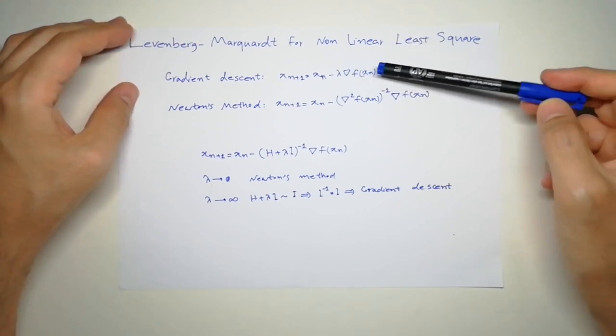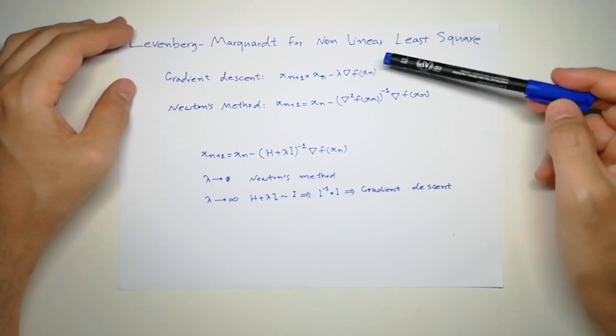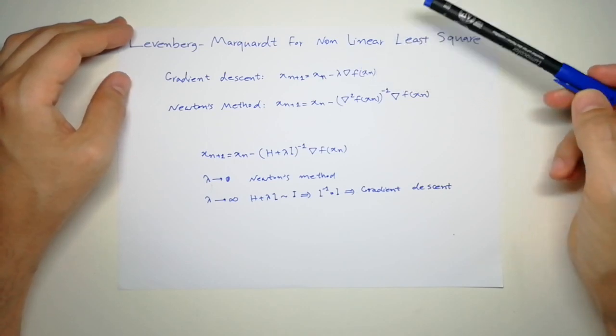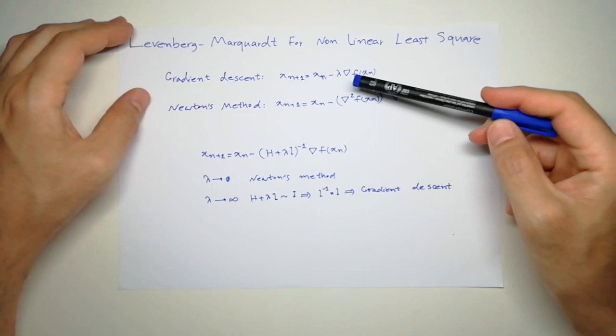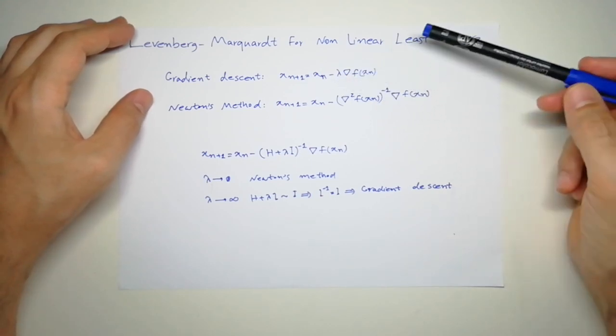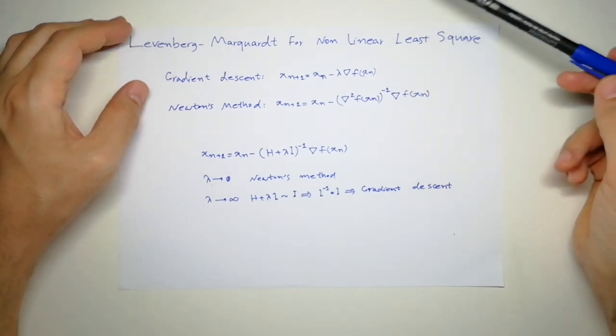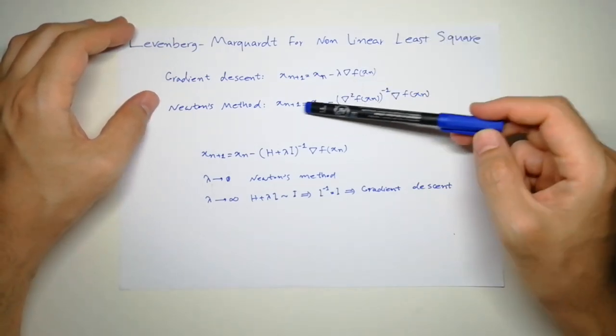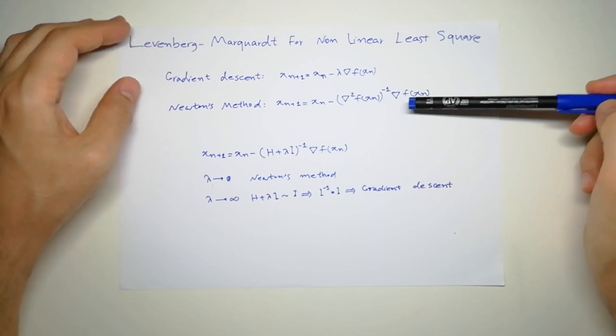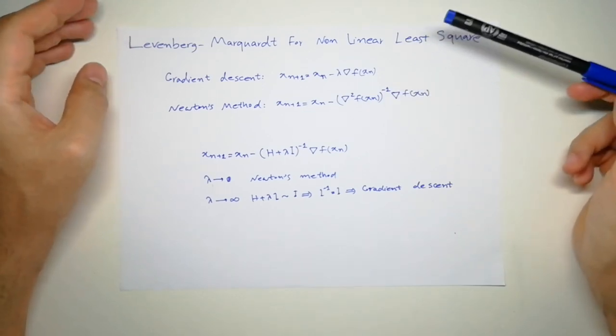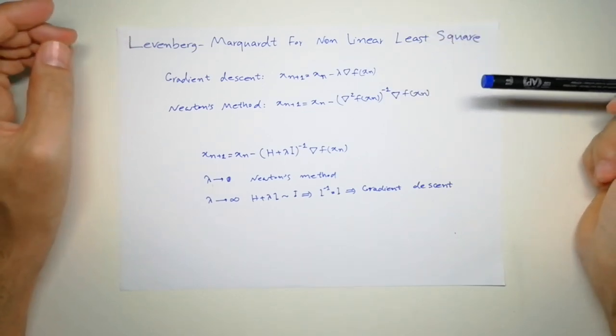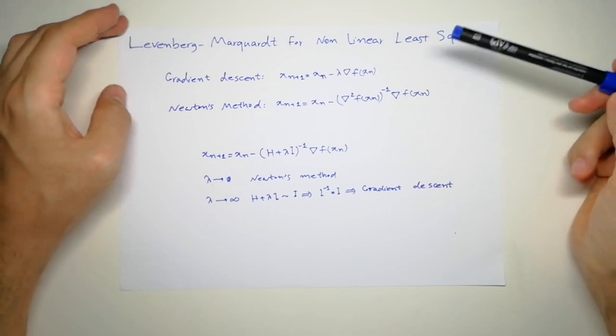If you don't know why the gradient of the function shows the best direction to minimize your objective function, have a look at my other video where I explain this. We also have Newton method for optimization, and if you don't know how we get this, have a look at my other video on Newton method for optimization.